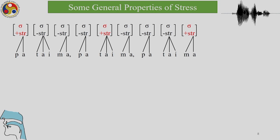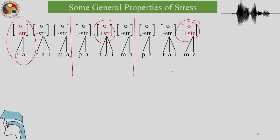There are only three ways of stressing the trisyllabic word 'pataima': stress on the initial syllable, stress on the middle syllable, or stress on the final syllable. Stressing an internal vowel as a separate syllable in 'pataima' is not possible unless there are four syllables. So if a vowel has to be stressed, it will become a syllable on its own, making 'pataima' a four-syllable word.